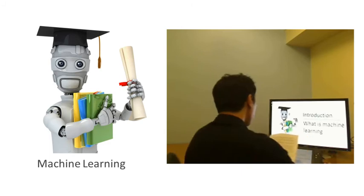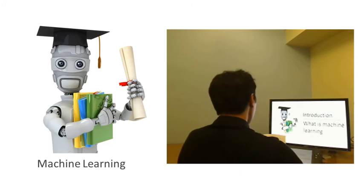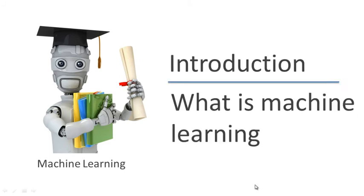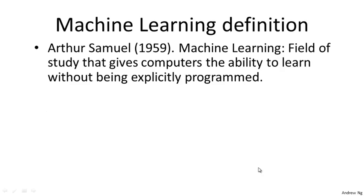Here's a definition of machine learning due to Arthur Samuel. He defined machine learning as the field of study that gives computers the ability to learn without being explicitly programmed.